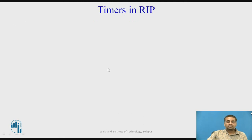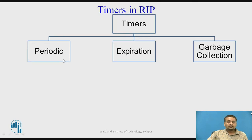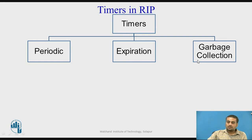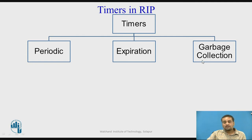RIP has three timers: the periodic timer, the expiration timer, and the garbage collection timer. The periodic timer is set randomly between 25 and 35 seconds, and periodic updates are generated once this timer expires. The expiration timer is 180 seconds — if an update for a route is not received within 180 seconds, that route is marked as invalid or not reachable. Once marked invalid, the route is not immediately removed; instead, the router waits 120 seconds so that the invalidity propagates to all neighbors, using the garbage collection timer. These three timers support the operation of routing information protocol.